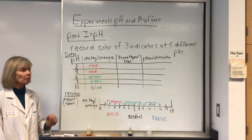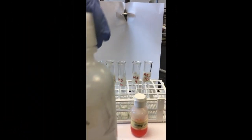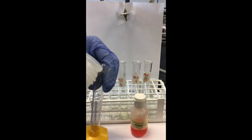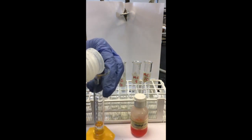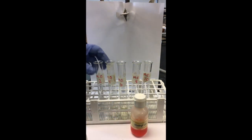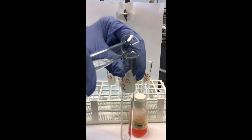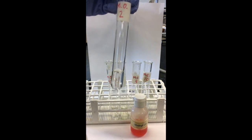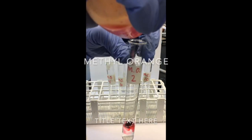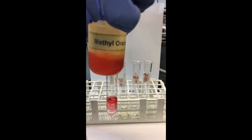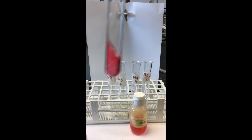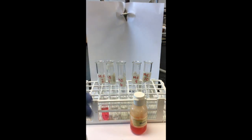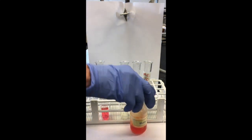Now let's look at the actual pHs of the solutions to get the true colors. I'm going to measure out 5 milliliters of my solution at pH 2 using my small graduated cylinder — approximately 5 mL; they don't have to be exact but should be close to the same for all of them. I'm going to add 2 drops of methyl orange, swirl the solution, and then record the color at pH 2. The other solutions I've already measured out the 5 mL, so all I need to do is add 2 drops of indicator to each one.